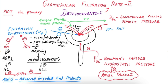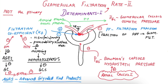The filtration fraction is the fraction of the renal plasma flow that becomes the glomerular filtrate. It is approximately 20%, meaning 20% of proteins are filtered. So in the efferent arteriole, the osmotic pressure rises to 36 mmHg, and taking the average, the glomerular colloid osmotic pressure is 32 mmHg.